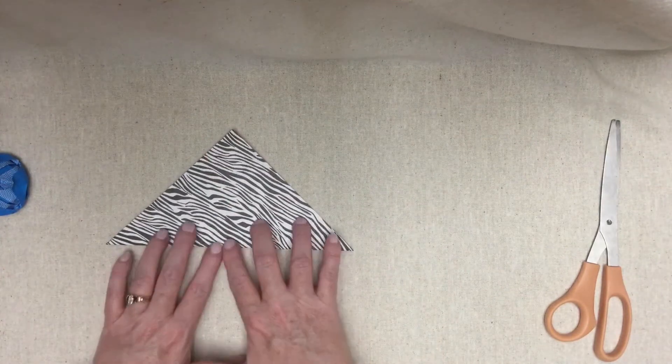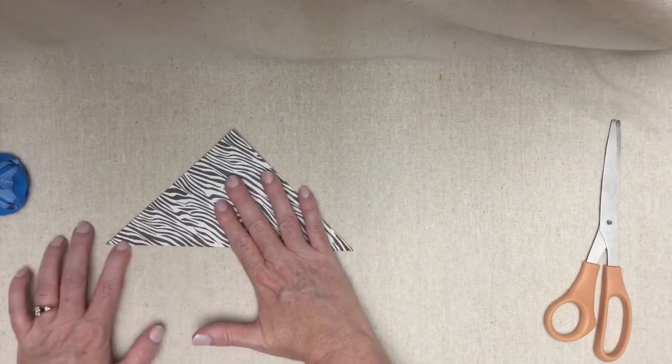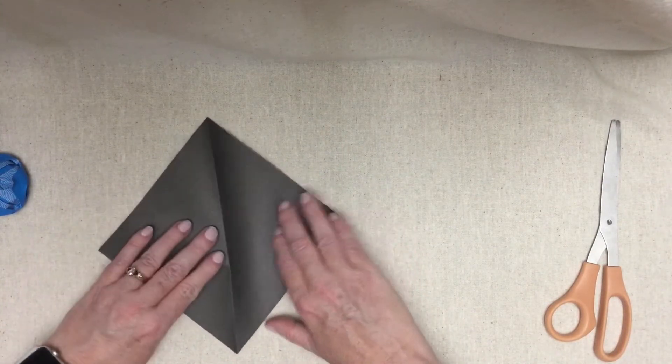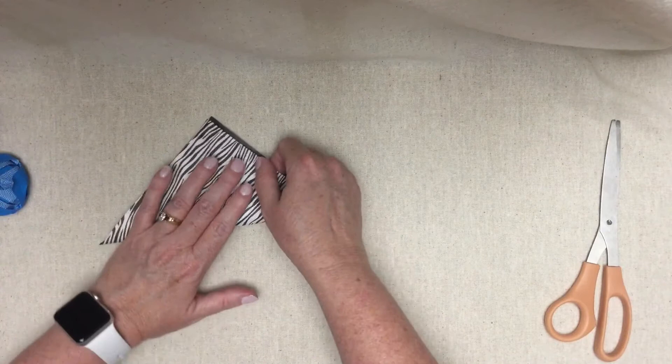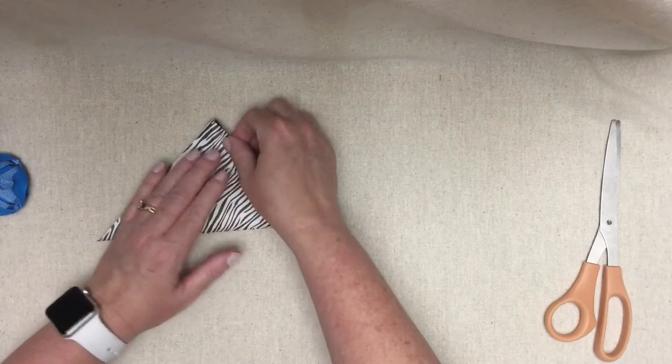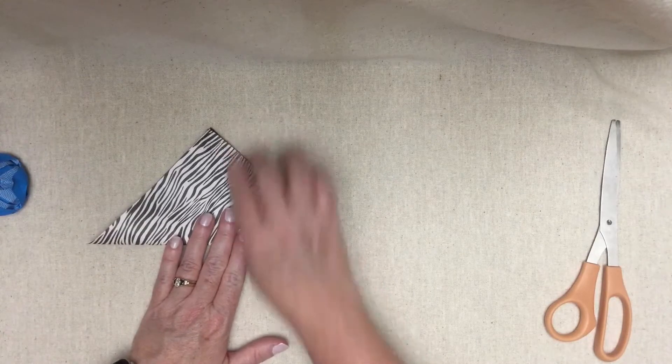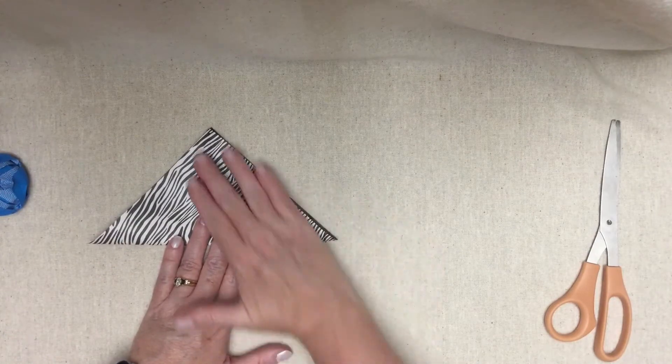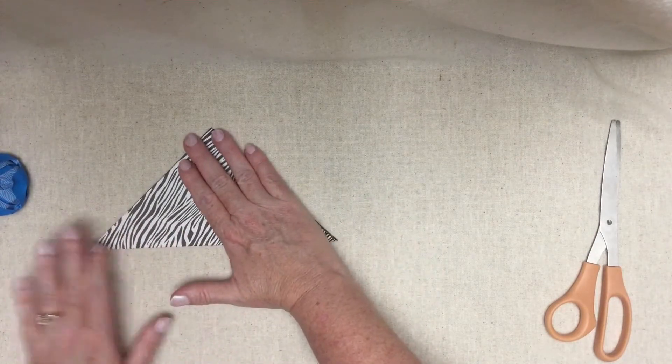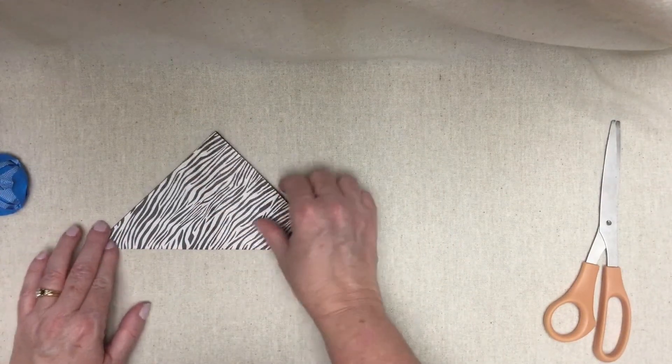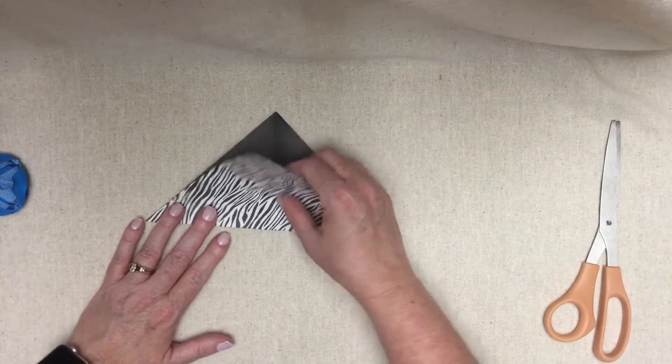All right, so you get that fold and you crease along the edge and then open it up and fold it along the other diagonal. And press in the crease. And open it back up.